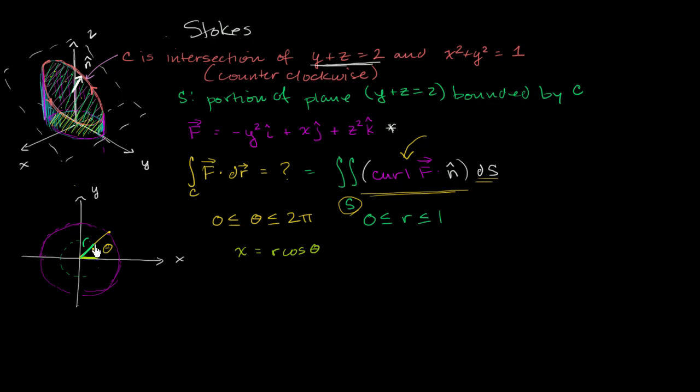And then the y component, this is just basic trigonometry, is going to be r sine theta. Y is going to be r sine theta. And then the z component, we already said z can be expressed as a function of y. Right over here, we can rewrite this as z is equal to 2 minus y.